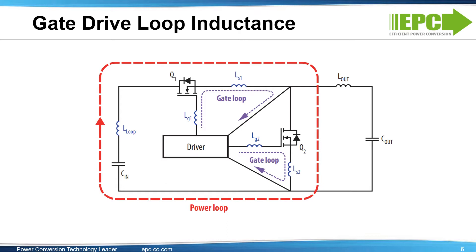The maximum allowable gate voltage for eGaN FETs is 6 volts, which is 1 volt above the recommended 5 volt gate drive voltage. This 1 volt of headroom requires a relatively accurate gate drive supply, as well as limited inductance between the eGaN FETs and the gate driver, as this inductance can cause a voltage overshoot on the gate. Inductance in the gate loop will directly limit the switching speed of the device, and care should be taken to minimize it to achieve maximum efficiency.